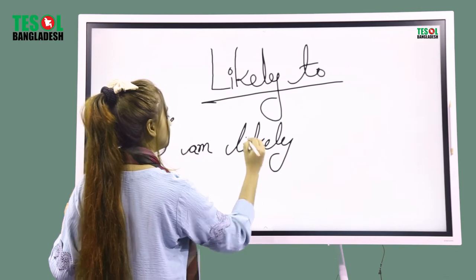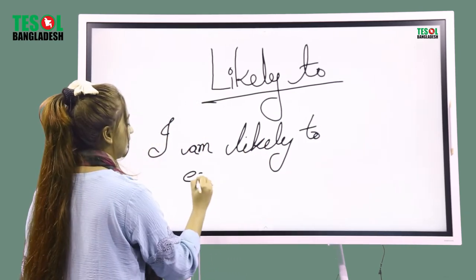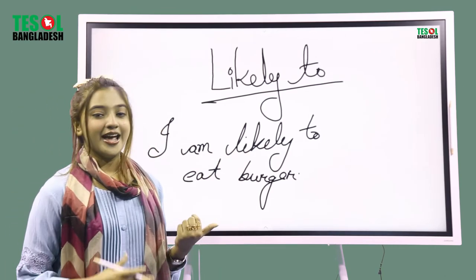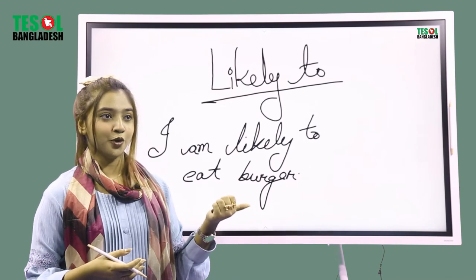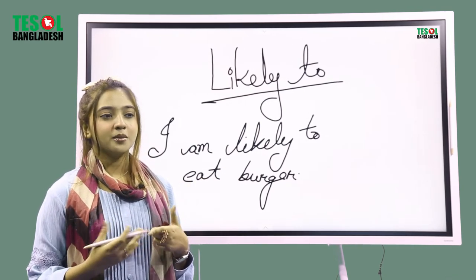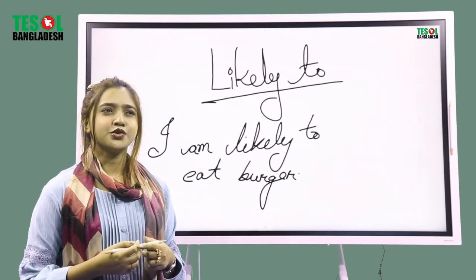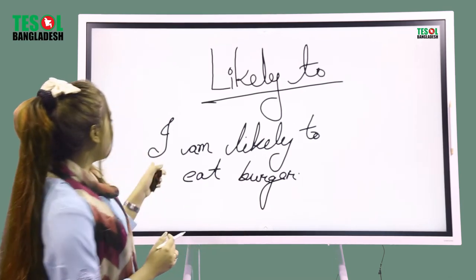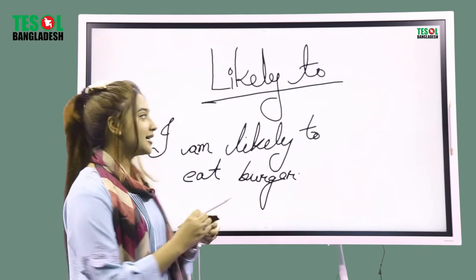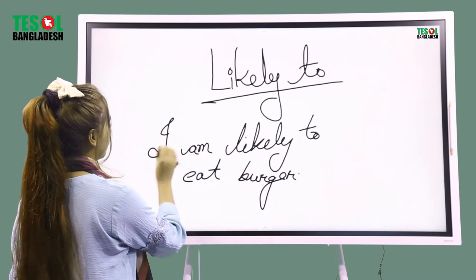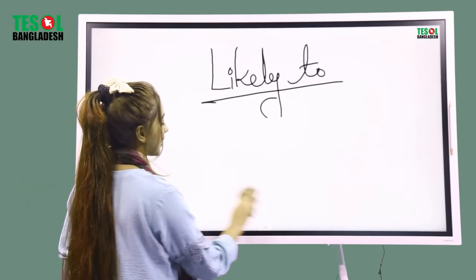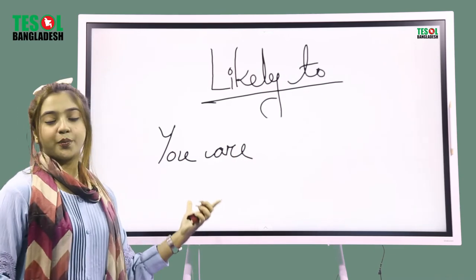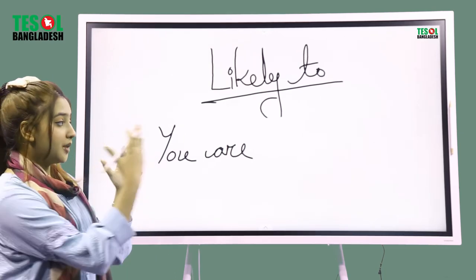I am likely to eat burgers. For example, I am a friend who is going to hang out, so I am going to ask which restaurant you are going to go to and what type of food you are going to eat. So I would like to say: I am likely to eat a burger. If you have a subject and auxiliary verb, then 'likely to' gives you an extension of the verb in V1 form.